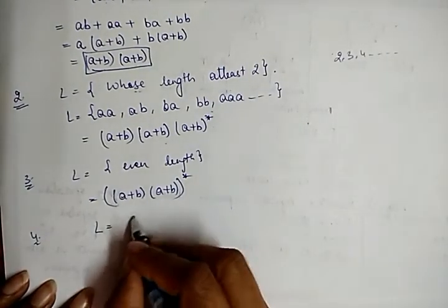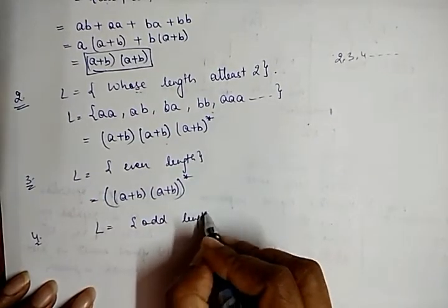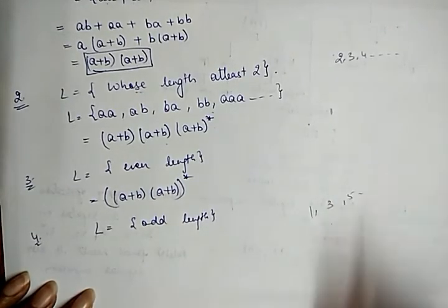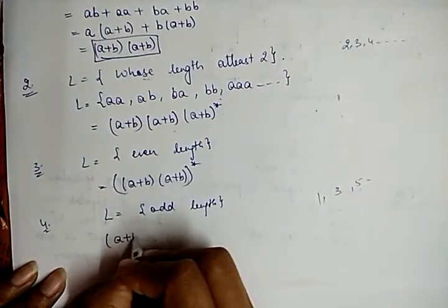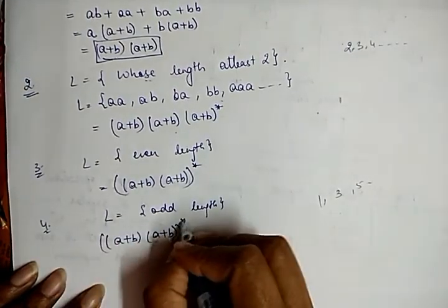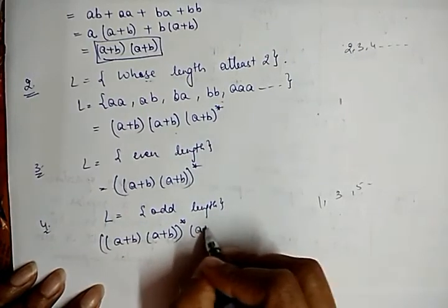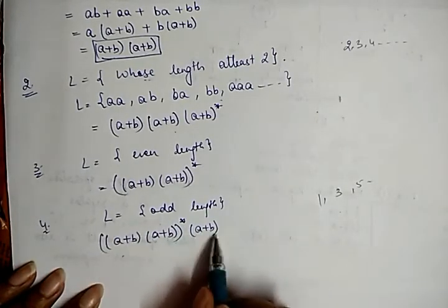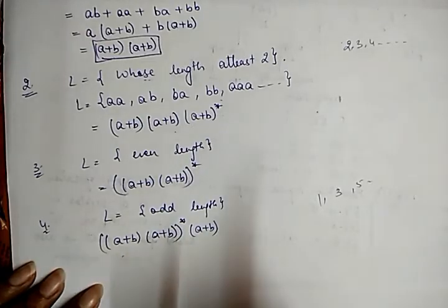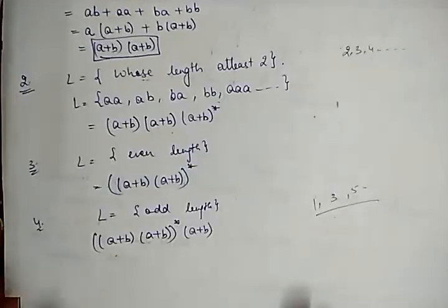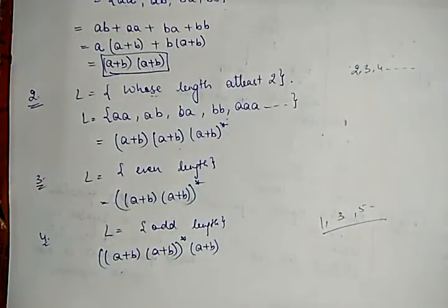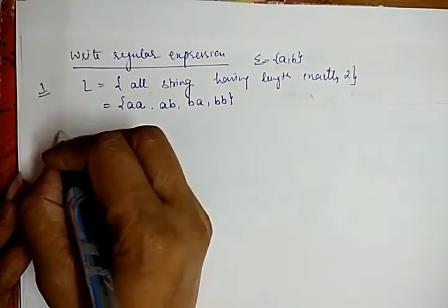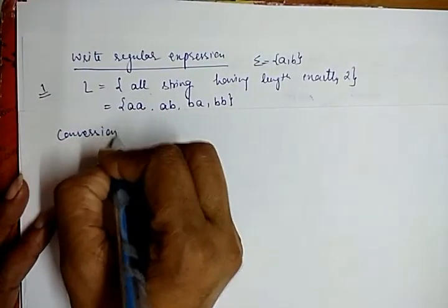Example 4: write a regular expression for all strings having odd length. Odd length means 1, 3, 5, and so on. We take the even-length expression ((a+b)(a+b))* and add one more (a+b). When the asterisk gives zero (epsilon), the last (a+b) gives length one; when it gives one repetition, we get length three; and so on. So the regular expression for odd length is ((a+b)(a+b))*(a+b).